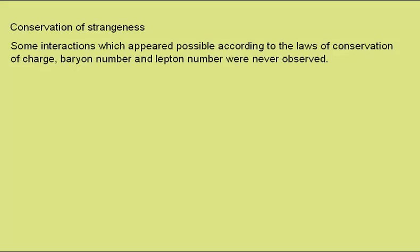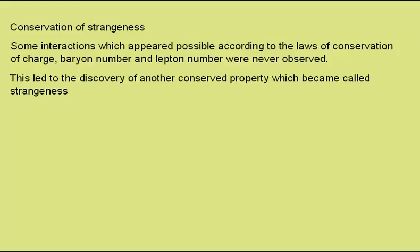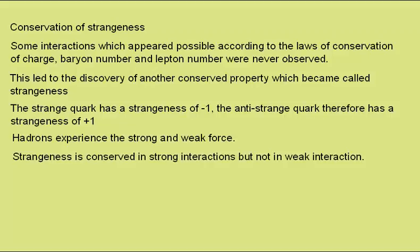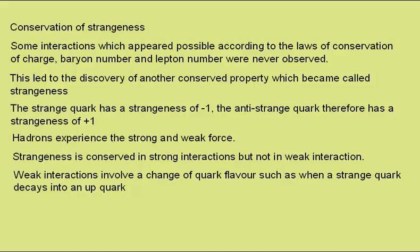Now to look at another property, that of strangeness. Some interactions which appeared possible according to the laws of conservation of charge, baryon number, and lepton number were never actually observed to occur. This led to the discovery of another conserved property, which became called strangeness, due to the strange behaviour of some particles. The strange quark has a strangeness of minus one, while the anti-strange quark has a strangeness of plus one. All other quarks have zero strangeness. Hadrons experience the strong and weak force. Strangeness is conserved in strong interactions, but not in weak interactions. Weak interactions involve a change of quark flavour, such as when a strange quark decays into an up quark.